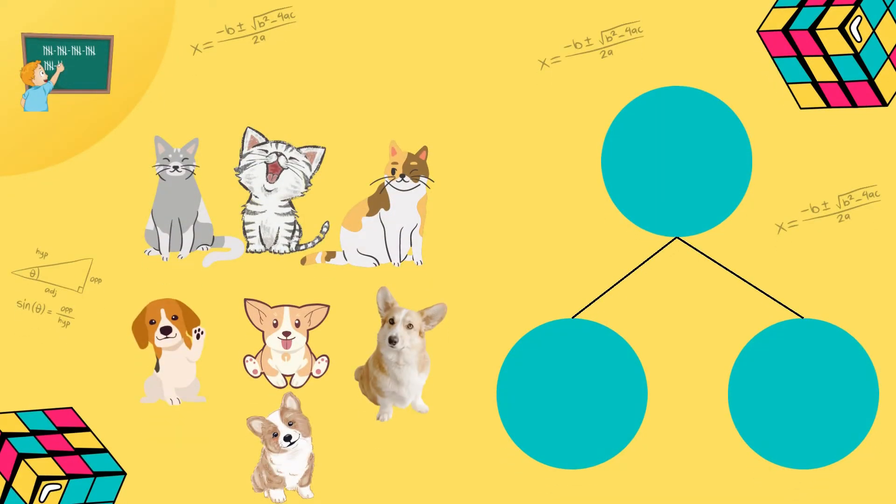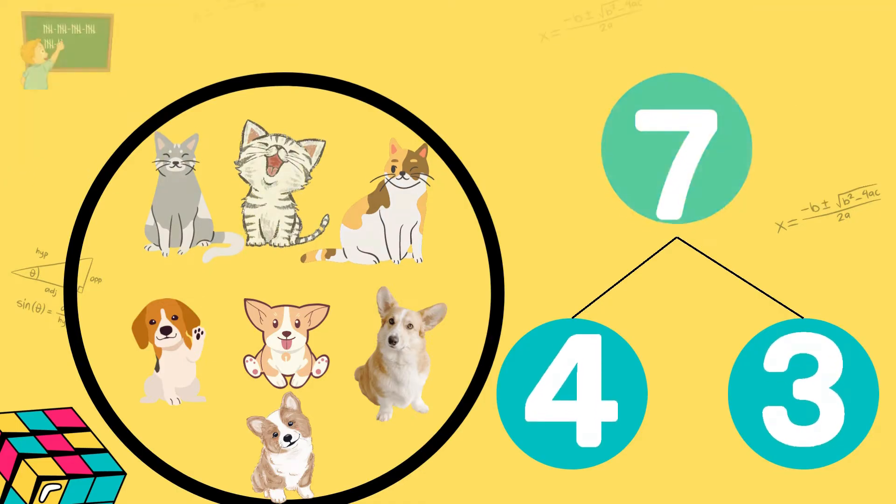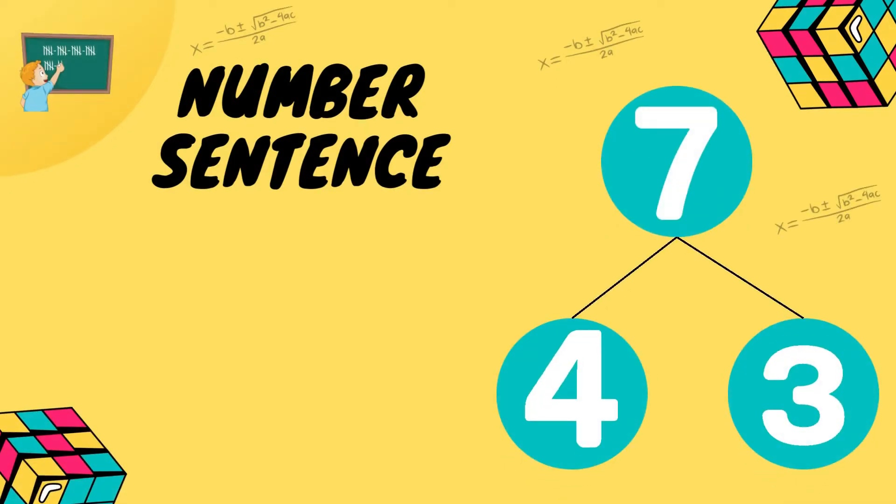Okay friends, we have pets. Count how many dogs? Very good. Four. How many cats? Excellent. Three. How many pets together? All the pets together. Count! Very good! We have seven pets. Congratulations because four and three make seven. Very good! And this is our number sentence: four plus three equals seven! Very good!